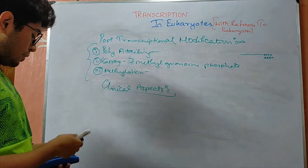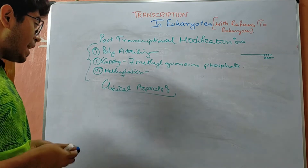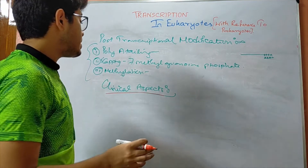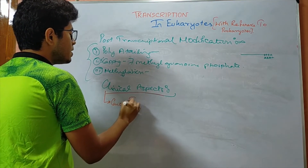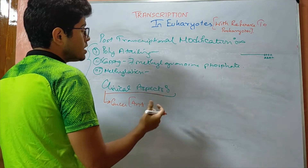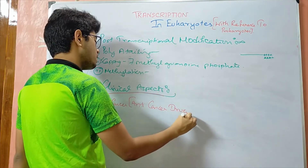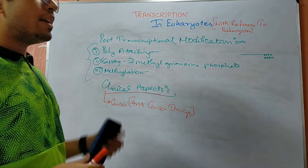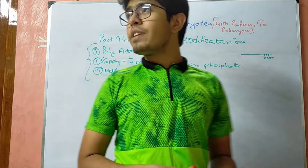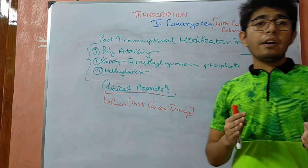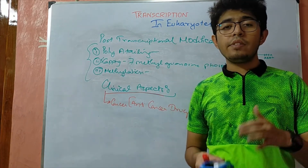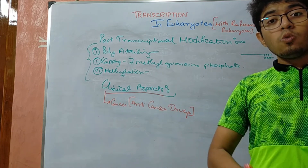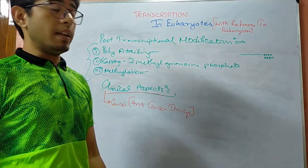The clinical aspect of eukaryotic transcription is that several drugs are used to inhibit the process of transcription. These inhibitors are mostly used as anti-cancer drugs, inhibiting the formation of carcinogenic proteins and thus preventing metastasis and cancer growth. Please refer to the prokaryotic transcription video for further details, as that video discusses the transcription process in much more depth.